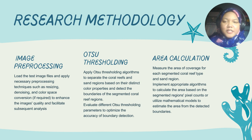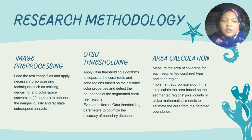For the research methodology, we are going to use three steps: image pre-processing, Otsu thresholding, and area calculation. For image pre-processing, we are going to load the image and apply necessary pre-processing techniques such as denoising, resizing, and color space conversion to enhance the image quality and facilitate subsequent analysis.